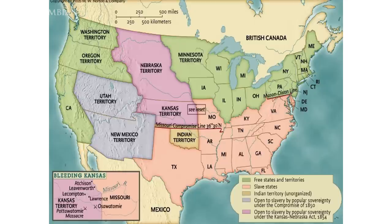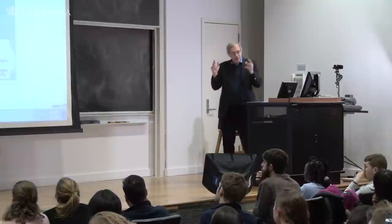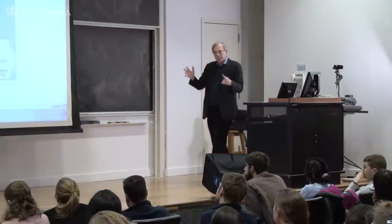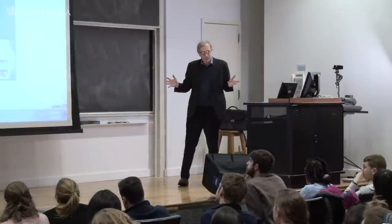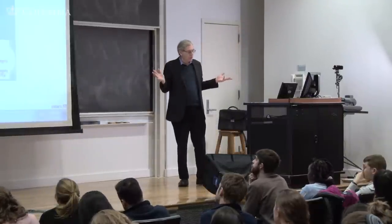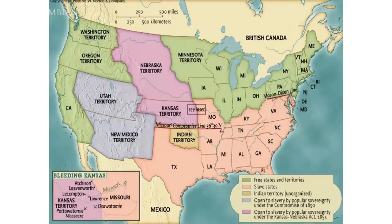In Kansas and Nebraska, since 1820, slavery has been prohibited. That's part of the Missouri Compromise. In that whole vast area—the great middle border, the great heartland of American agriculture—no slavery. That's been on the law since 1820.